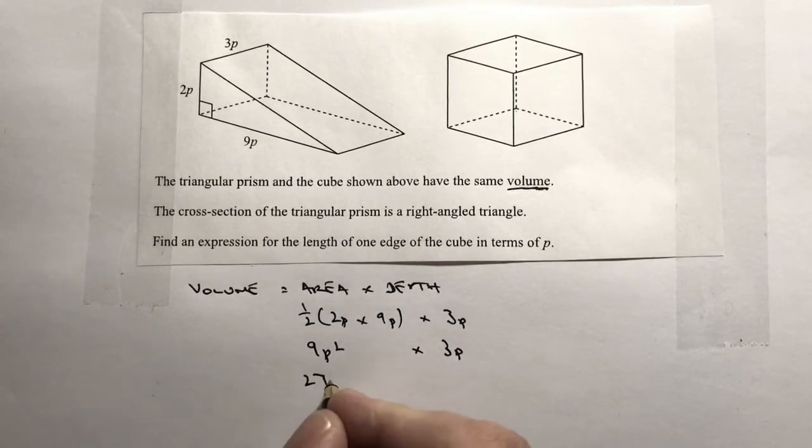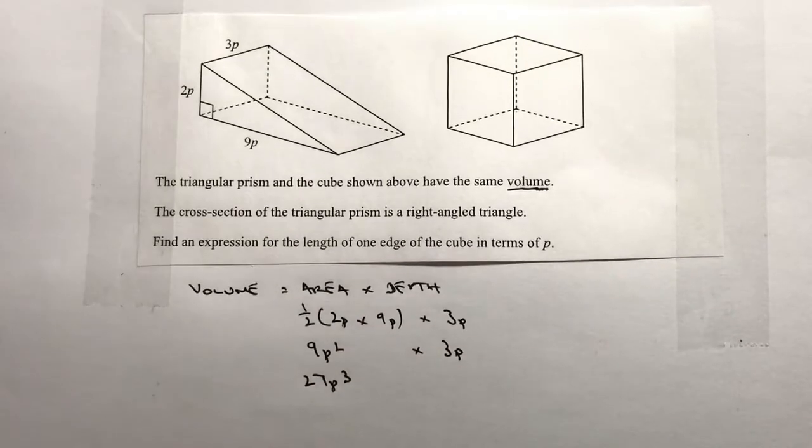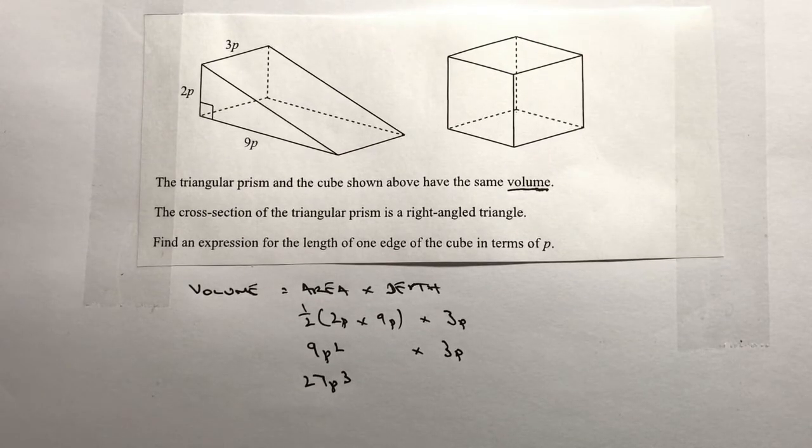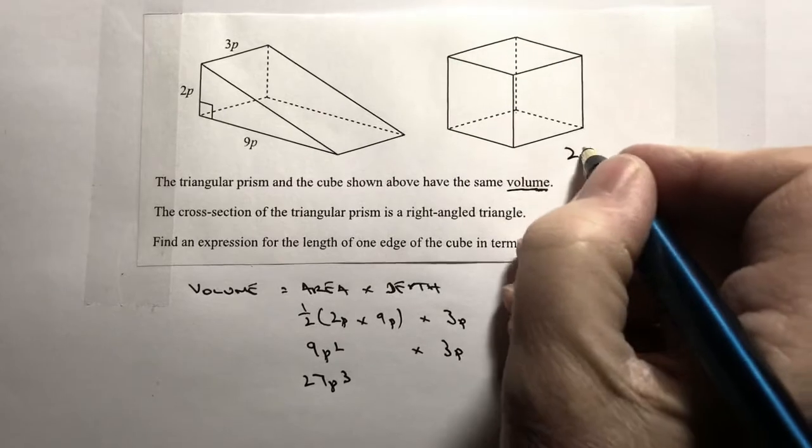27p cubed. That's actually the volume of the triangular prism. What it tells us is that both the triangular prism and the cube have the same volume. In other words, the volume of the cube is also 27p cubed.